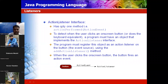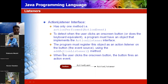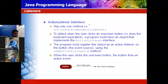The ActionListener interface contains only one method. Similar to the mosquito analogy where the brain orders the hand, when you click on a button, there is a method in the ActionListener interface that detects when the user clicks an on-screen button or does the keyboard equivalent. The ActionListener interface listens to that request and performs the operation. To add an ActionListener, we use the addActionListener method.